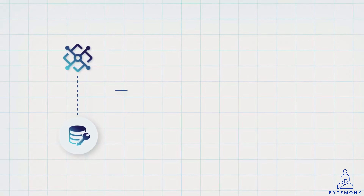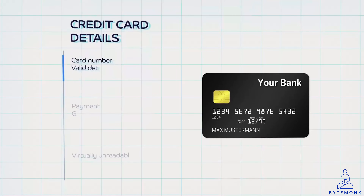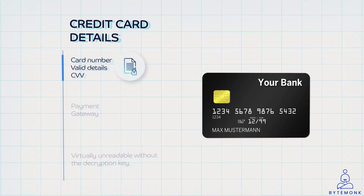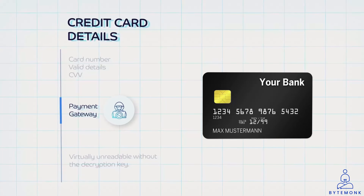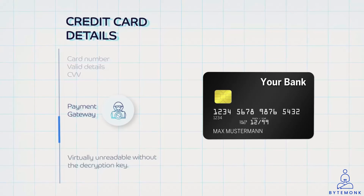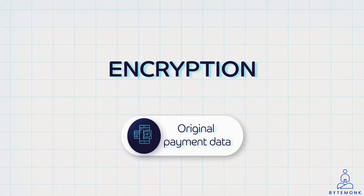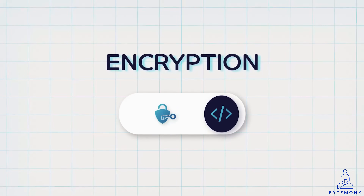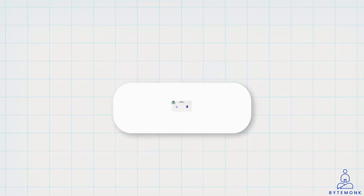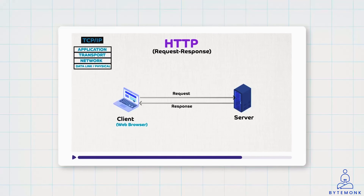Payment gateways use data encryption during the transmission of payment information to protect it from interception. When you enter your credit card information on an online shopping website, that information is encrypted before it is transmitted to the payment gateway. Even if someone were to intercept the data during this process, it would be virtually unreadable without the decryption key. Encryption involves converting the original payment data into a coded format that can only be deciphered with the proper decryption key. This is covered in detail in my HTTPS video, where I talk about various security algorithms and their use in depth.